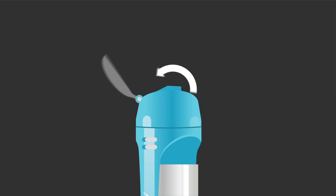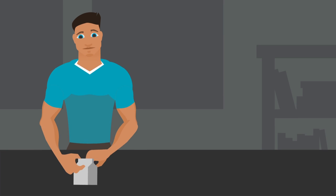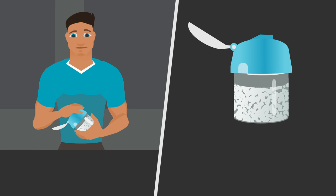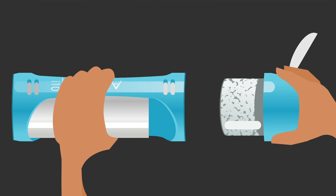Unscrew the top of the device. Remove a new cartridge from the airtight bag. Screw it into the top of the device and reattach to the main chamber.